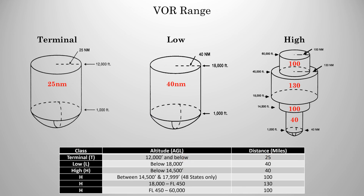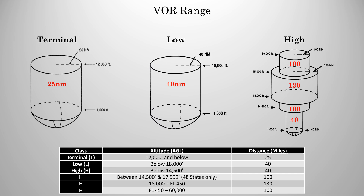Now depending on their class, the VORs will only be effective for a certain range. Terminal and low VORs both have one set range, but high VORs will fluctuate depending on altitude. Since most of your flying will be below 14,500, the way I recommend remembering this for now is 25, 40, 40. It makes it a little easier, and that's realistically what you'll be using for the time being.